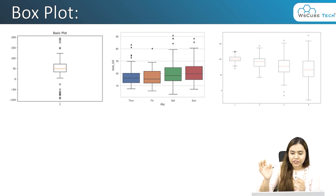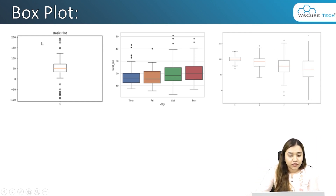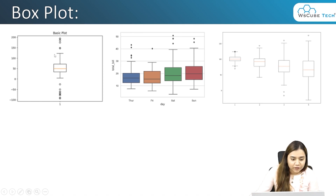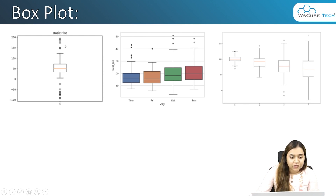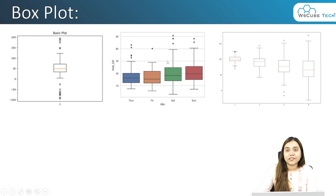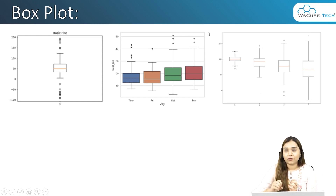This is how it looks. You can see different things here: we have one center line, a box, some lines extending out, a horizontal line, and some dots. We'll understand what all these things are. Let's first understand what a box plot is and how to read it.